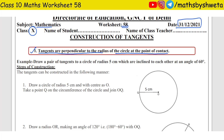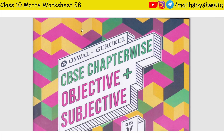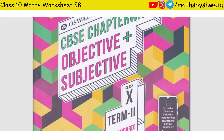As you all know, this chapter is in Term 2. Some children are asking which book should be taken for Term 2. So I will tell you — for standard children, Oswald Gurukul. You have a book in which you will get CBC chapter-wise objective and subjective questions, especially for Term 2.